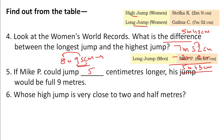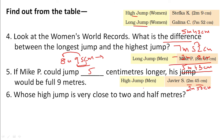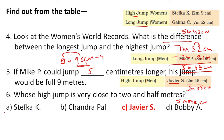The men's high jump world record is very close to 2 and a half meters. Javier S jumped 2 meters 45 centimeters. To be exactly 2 and a half meters, it needs to be 2 meters 50 centimeters, since 50 centimeters is half a meter. So if Javier jumps 5 more centimeters, he could jump exactly 2 and a half meters.